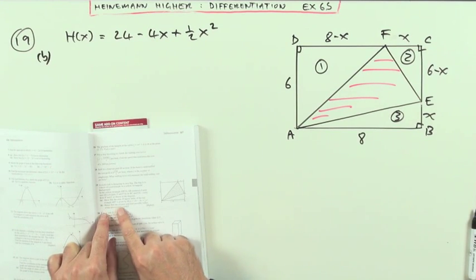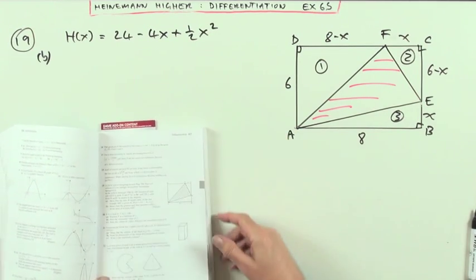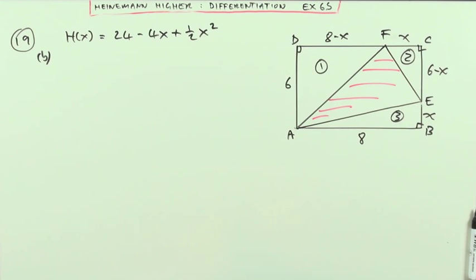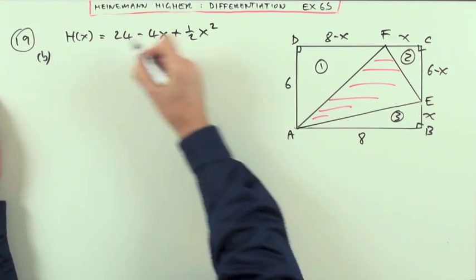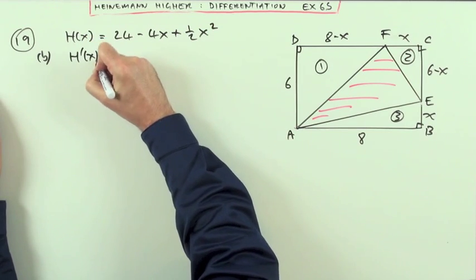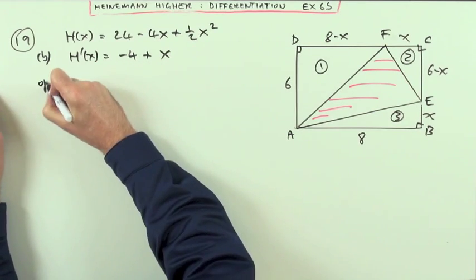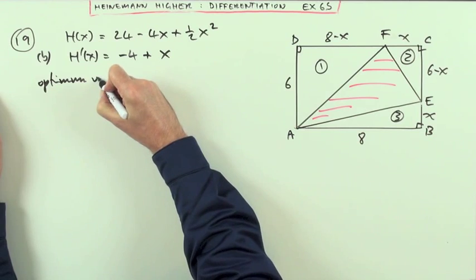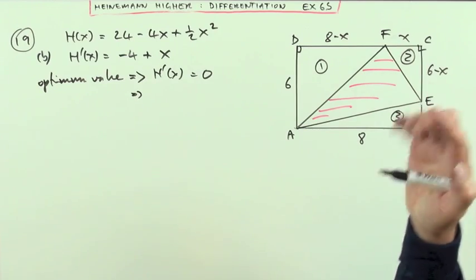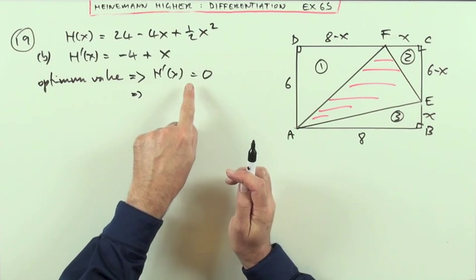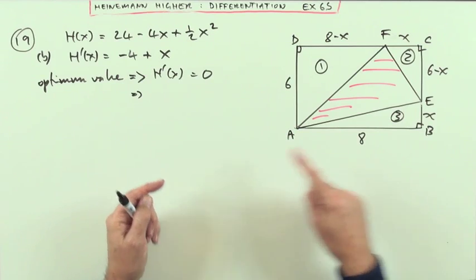Now for B, it says hence find the greatest and least possible values. So it's an optimisation question in that it's looking for greatest and least values. But it doesn't state which it is because it's an interval type question. Well, first of all, if you're looking for an optimum value, it's like looking for a stationary point. You take that expression, which is ready to go, and you would differentiate it. So that would just be negative 4 plus X. And if there are any optimal values, an optimum value means that this derivative should equal zero.